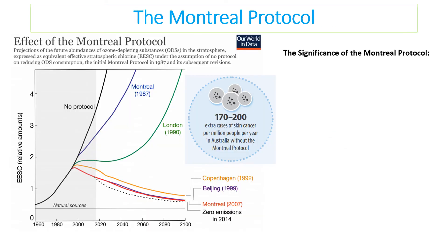The Montreal Protocol graph shows different stages of CFC emission reductions. With no protocol in place, CFC levels would have risen severely, leaving very little ozone, and there would have been up to 200 more cases of skin cancer per million people in Australia per year. With the initial Montreal Protocol, levels dropped, and with subsequent protocols CFC emissions dipped further and further, reaching effectively zero emissions in 2014.